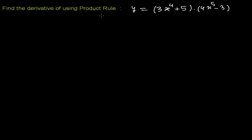Hello friends, here once again we have another problem of finding a derivative using the product rule. The question is already saying we have to use the product rule. So we have to assume this is our given function, where I'm going to imagine this is my first function, let me suppose u, and this is my second function, let me suppose v.